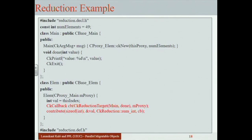This is called an asynchronous reduction because you continue working — you don't wait for the reduction to complete; it completes in the background. This has been a concept in Charm++ from the very beginning. MPI blocked everyone until the reduction was complete; more recently, MPI has added non-blocking reductions as well. If every chare array element wants to know the result, one element gets it and broadcasts to everyone, but in the meanwhile other work can proceed.